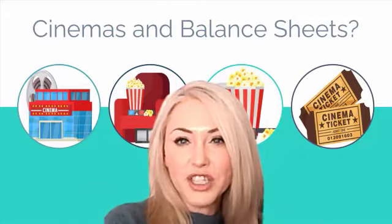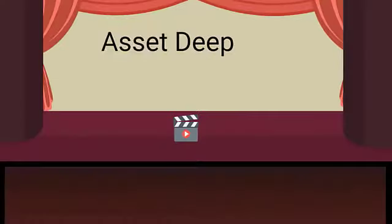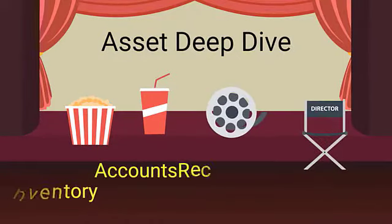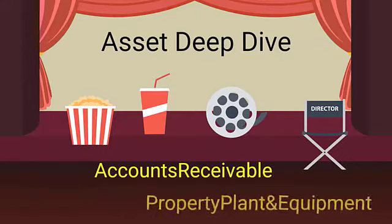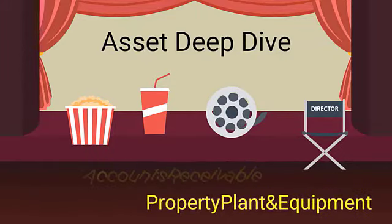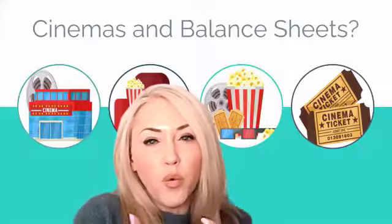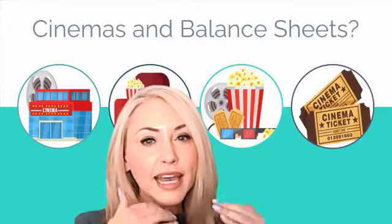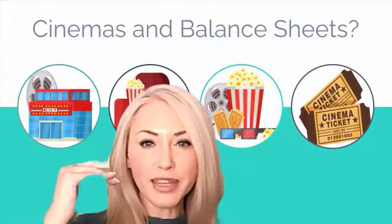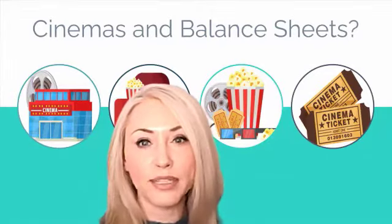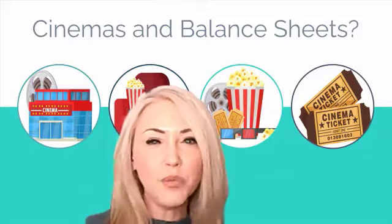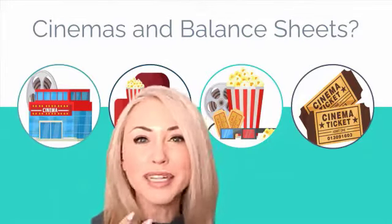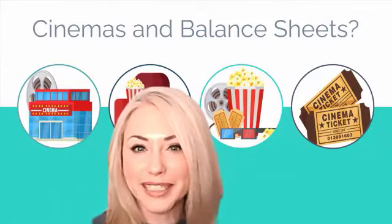What we're going to do is actually talk through the asset section of the balance sheet, which remember the asset section is really just a fancy way of saying, what does the movie theater company own? What are all the assets that they have? Let's think through what are the asset categories that you would see on a balance sheet and would you expect it to be a big number, a small number? What would you expect to see for a cinema?